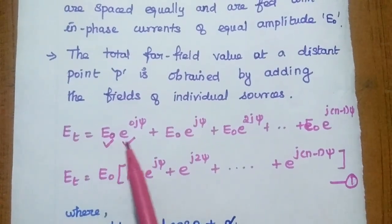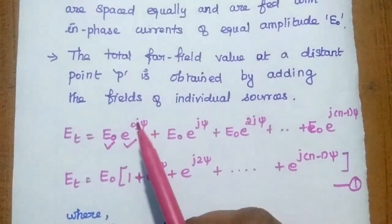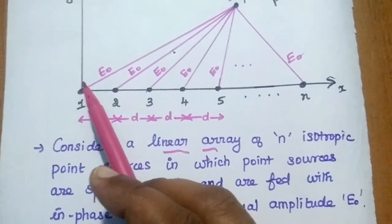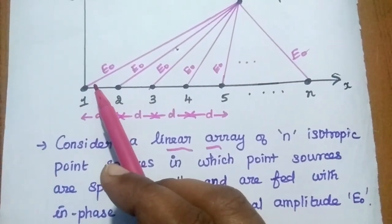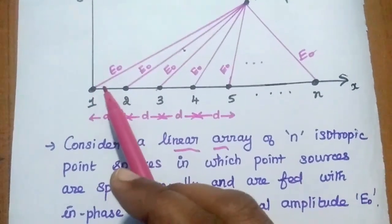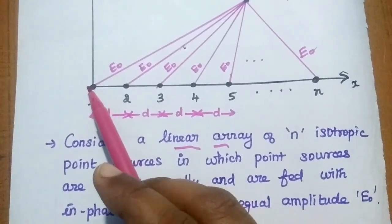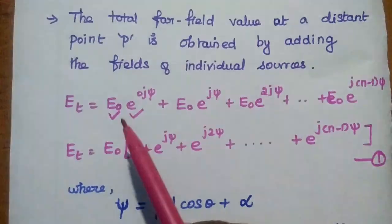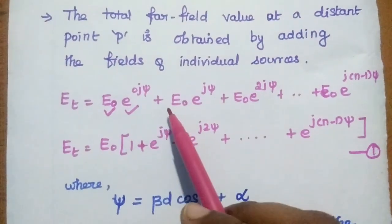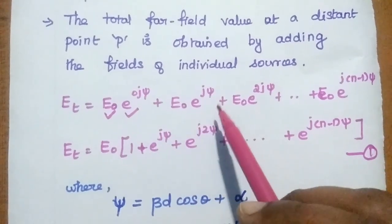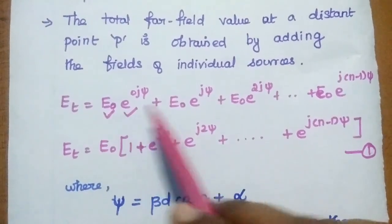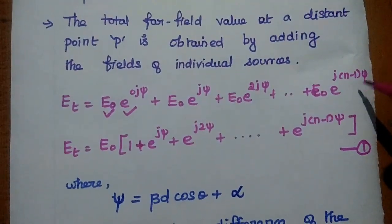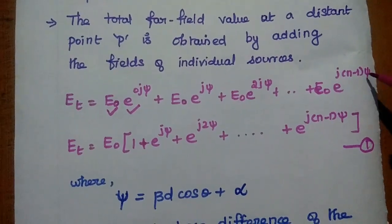The total electric field is E₀ · e^(j·0·ψ) because the first element has no phase difference — it is the reference element, so we set its phase to zero. For the second element, there is a phase difference relative to the first element. Likewise, the Nth element has a phase difference of j·(N−1)·ψ. So the total electric field is the sum of all these terms.